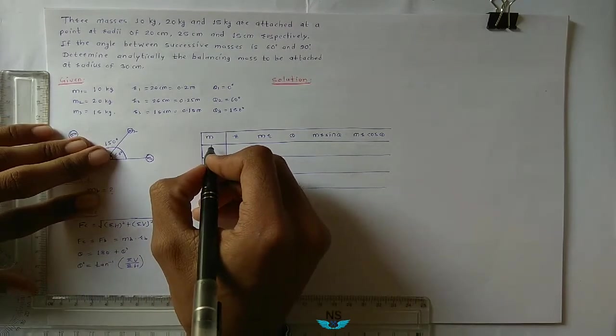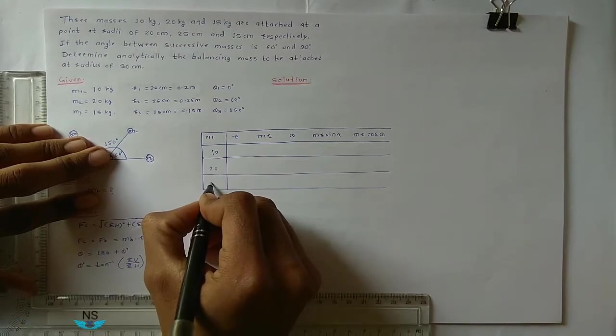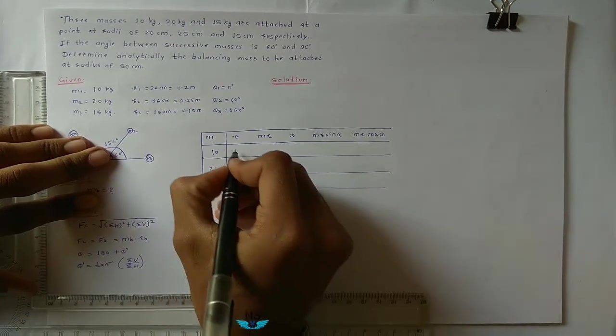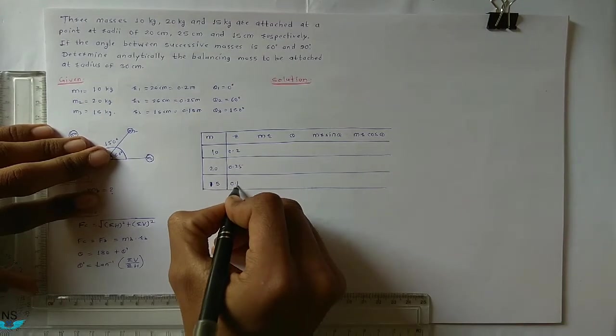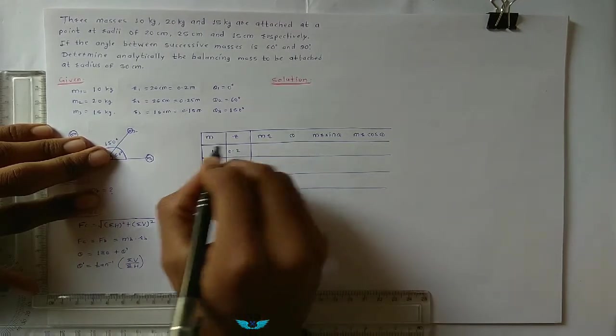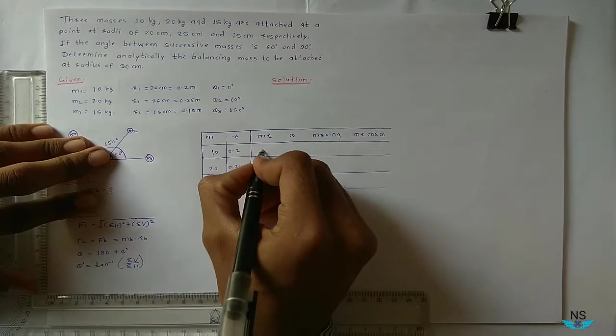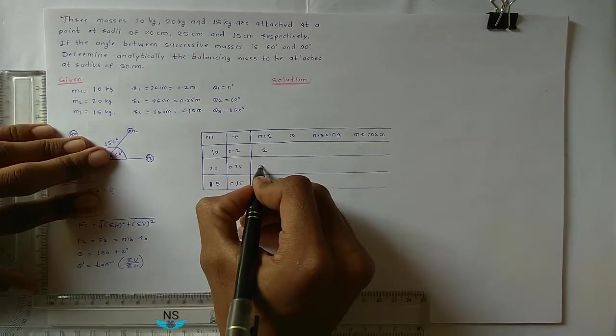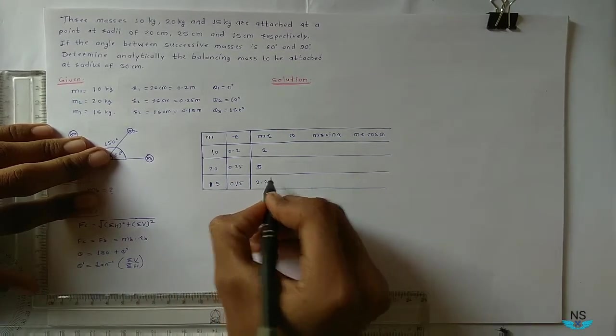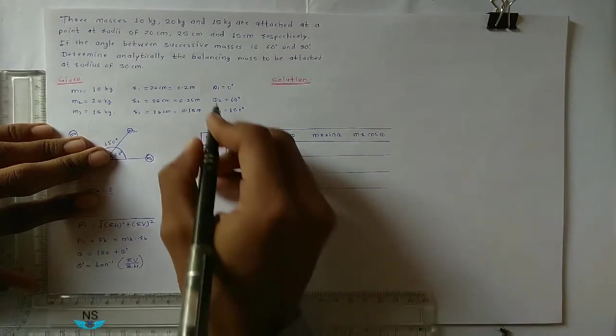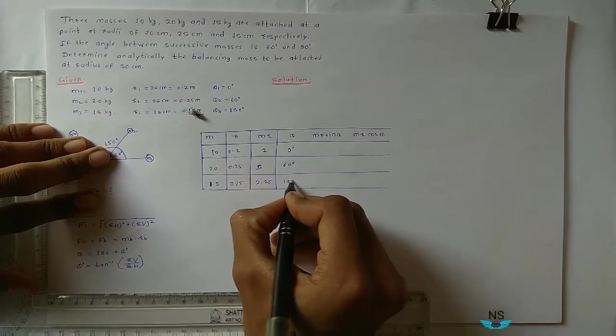Write down the values. M: 10 kg, 20 kg, 15 kg. R: 0.2, 0.25, 0.15. Then M R means M into R: 10 into 0.2 equals 2, 20 into 0.25 equals 5, and 15 into 0.15 equals 2.25. Now theta 1 is 0 degrees, theta 2 is 60 degrees, theta 3 is 150 degrees.